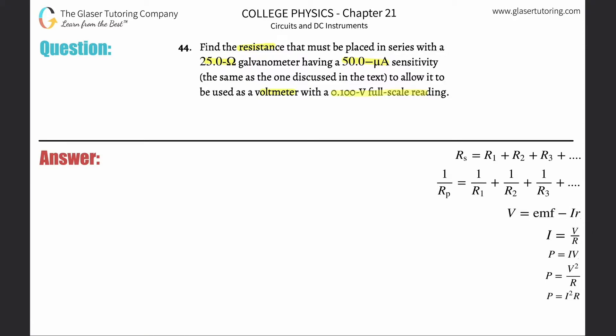0.1 voltage full scale reading. Alright, so essentially what we have to realize is that we have this 25 ohm galvanometer and we're going to connect another resistance in series with this resistance. So you know that we're probably going to have to calculate the equivalent resistance in series. We'll probably have to add those resistances up, right?